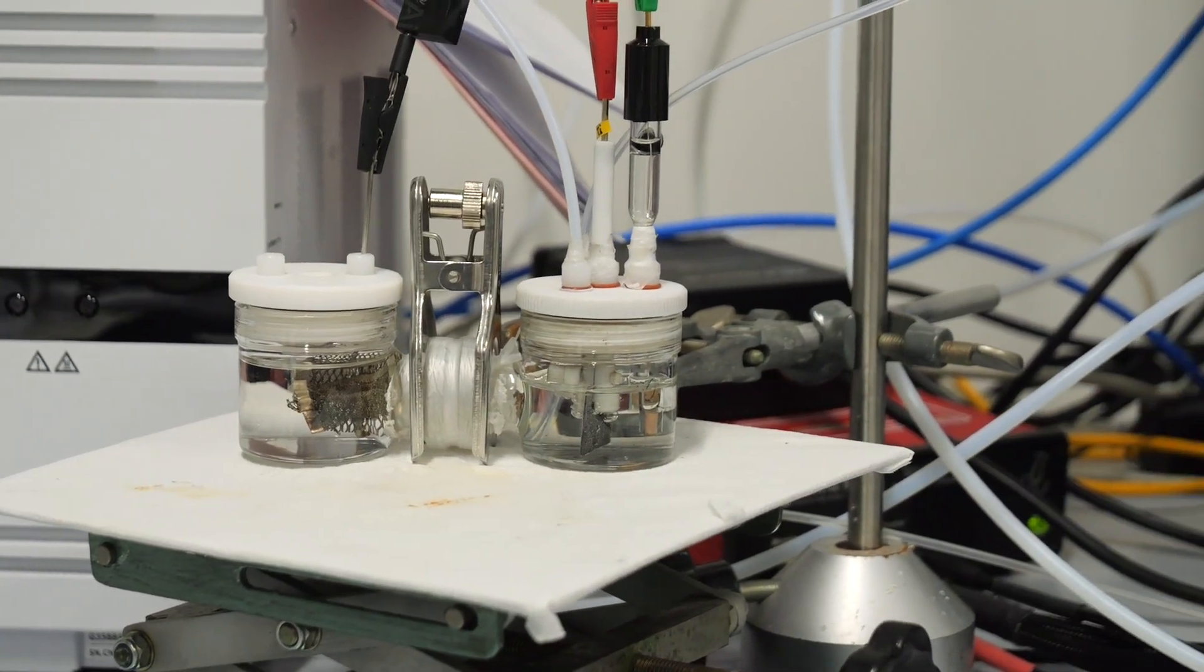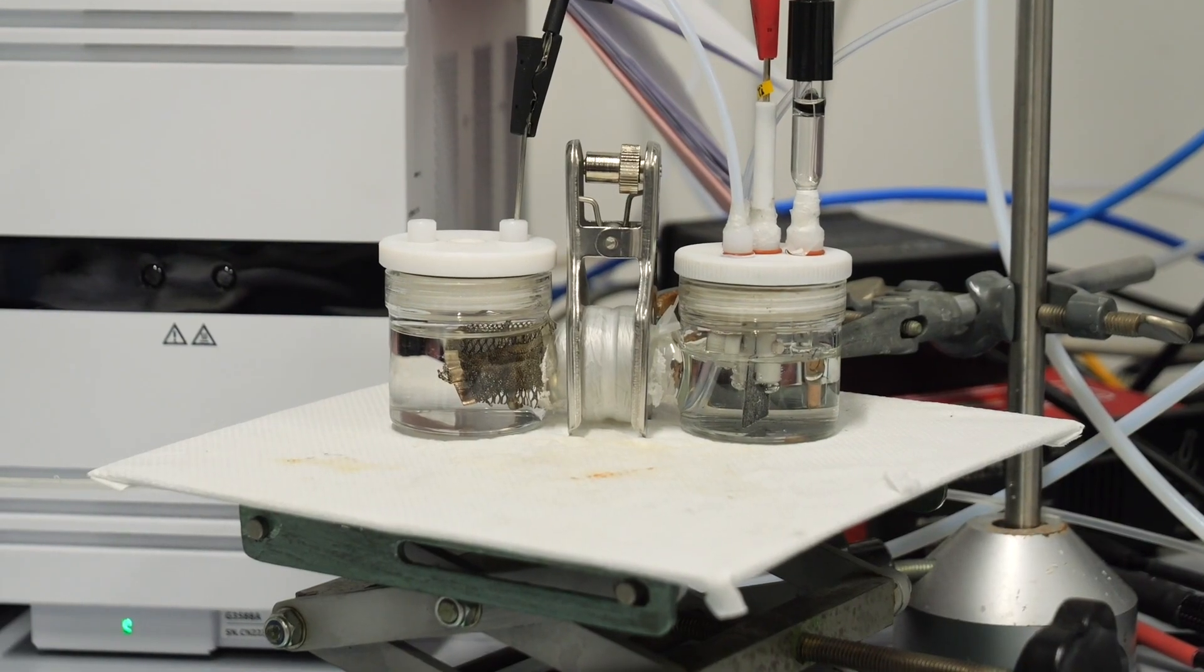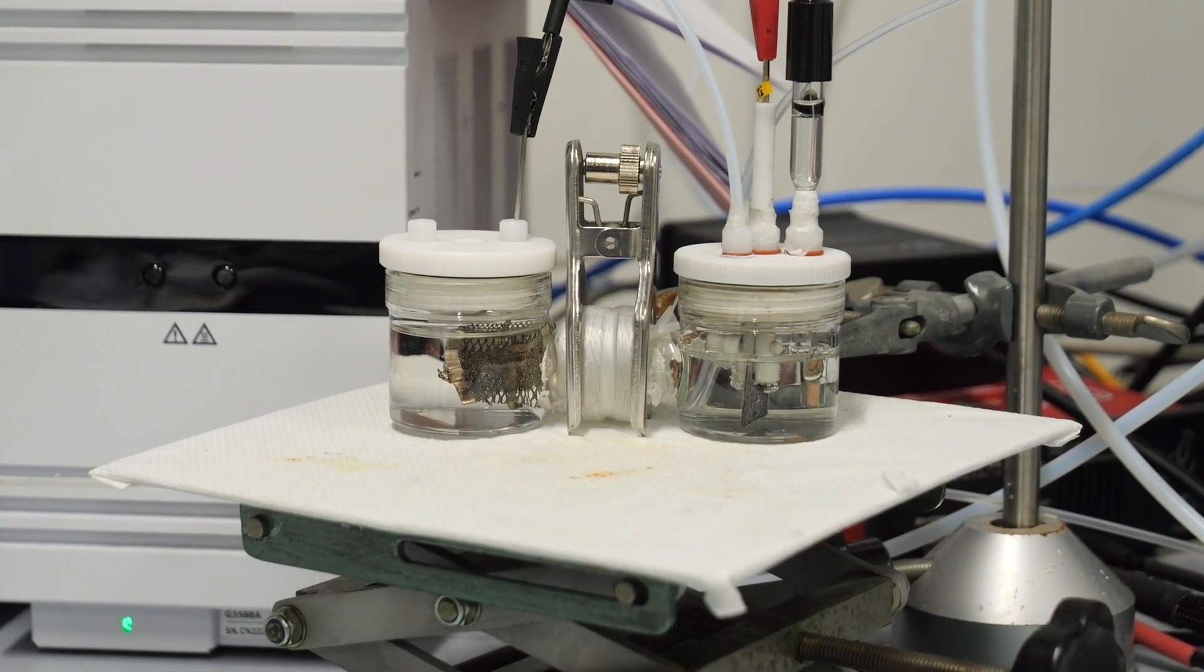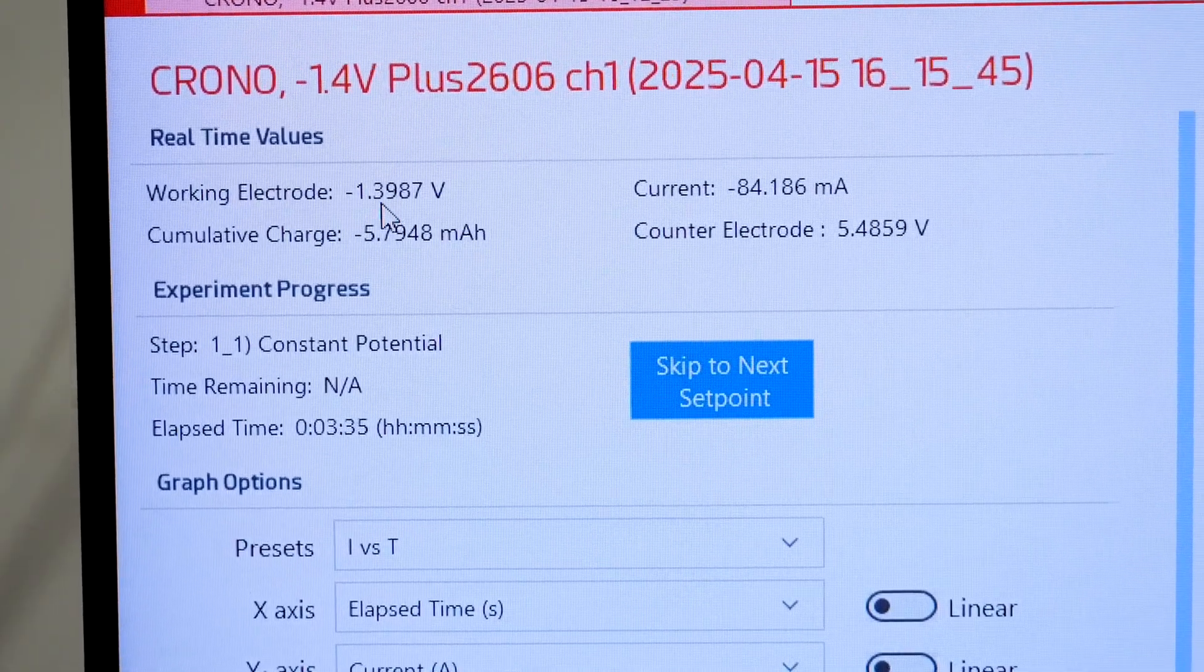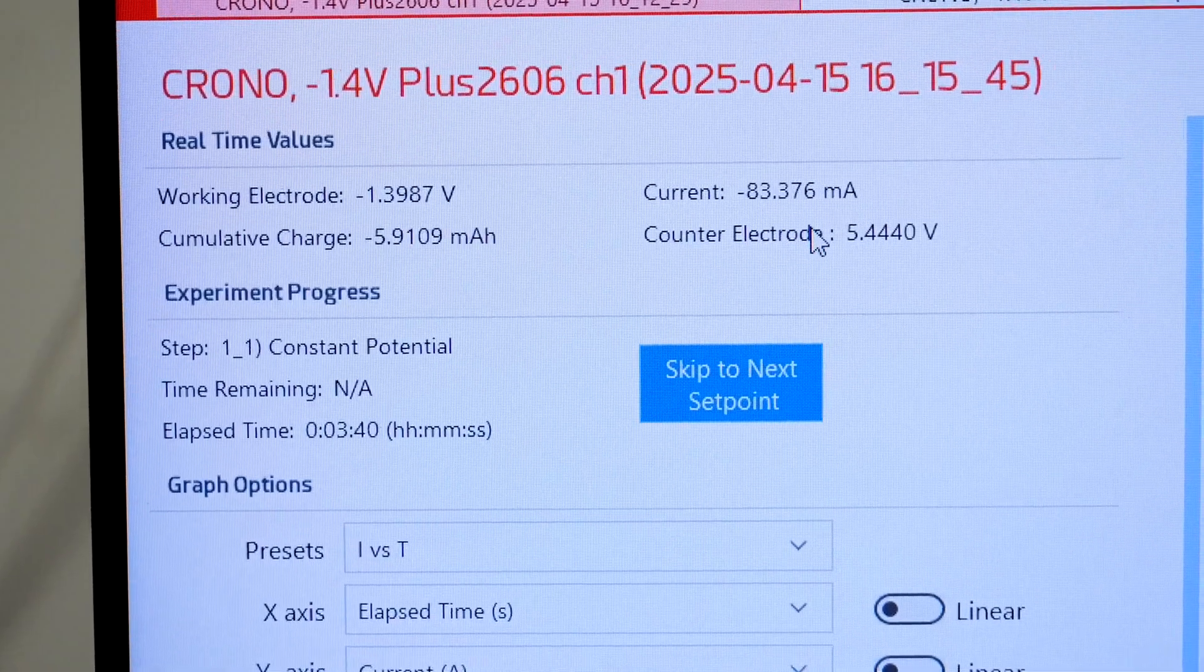Here on the cathode side, we bubble some CO2 inside the solution and then we do the reaction. We apply some negative potential, as you can see here, minus 1.4 volts.